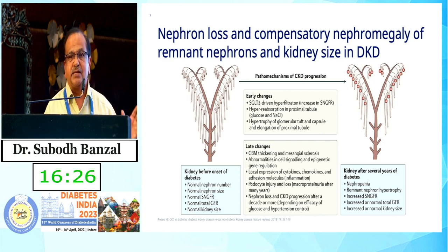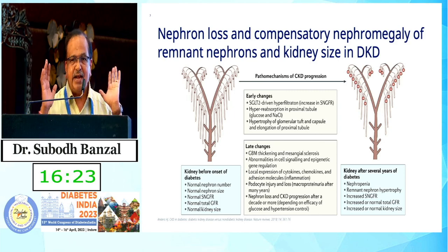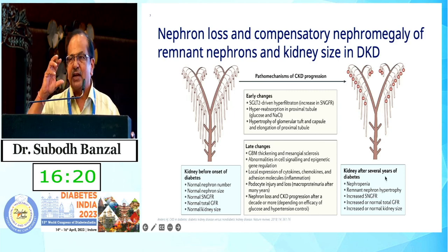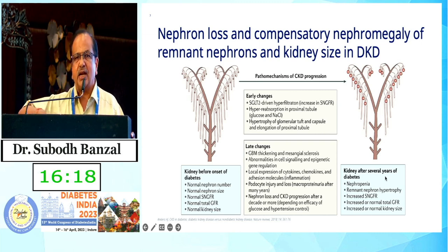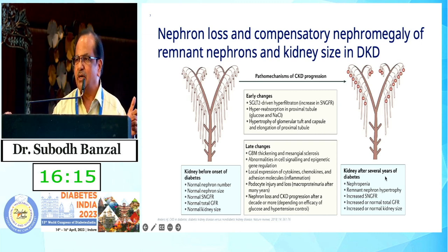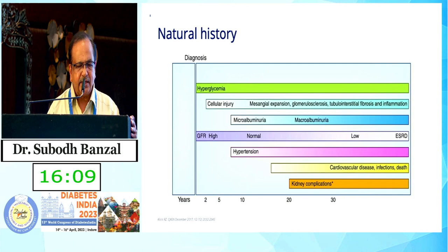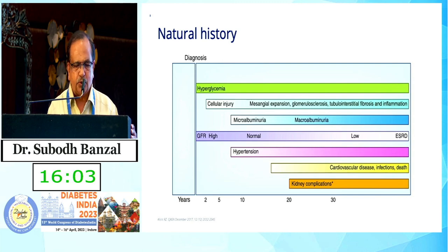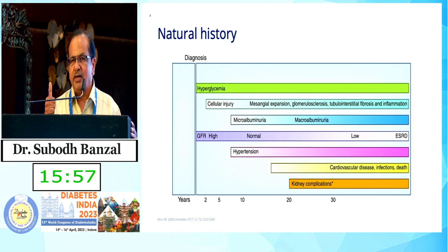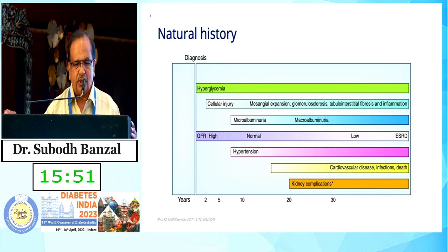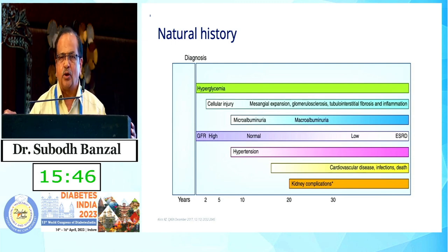With time, nephropenia occurs, sclerosis develops, and though kidney size may appear normal or hypertrophied, the number of nephrons decreases while single nephron hyperfiltration continues. Over time, hyperglycemia causes cellular injury, mesangial expansion, microalbuminuria, then macroalbuminuria. GFR is initially high, becomes normal, then low — leading to cardiovascular morbidity, mortality, and renal complications.